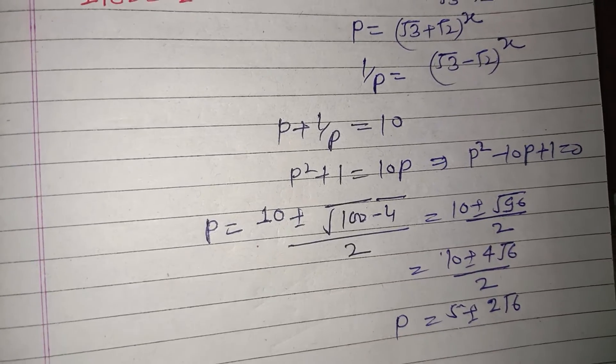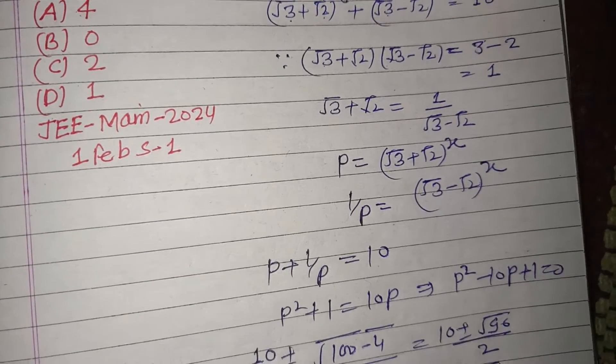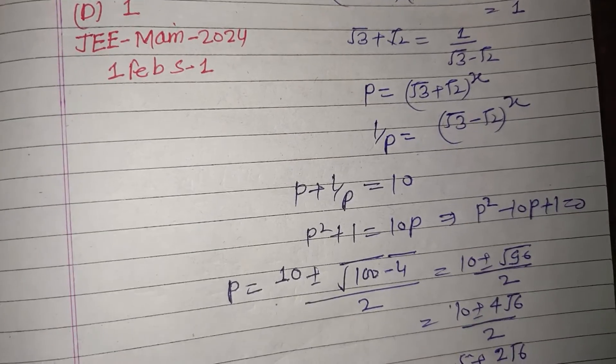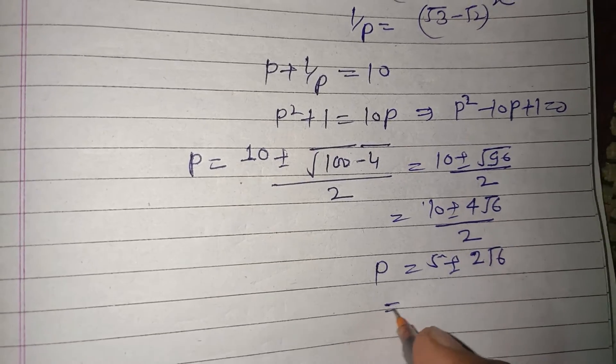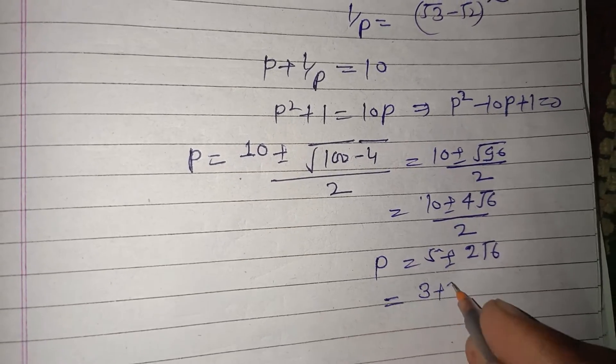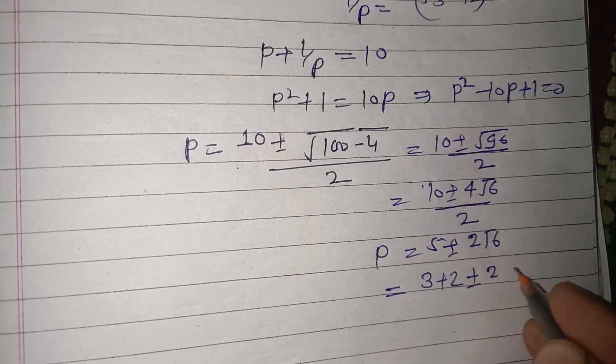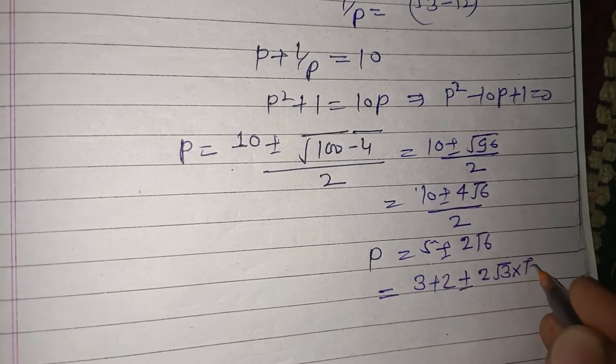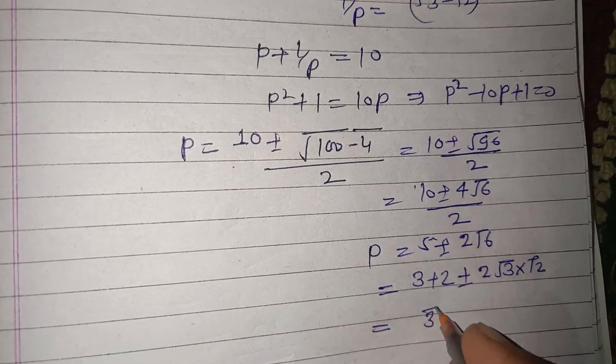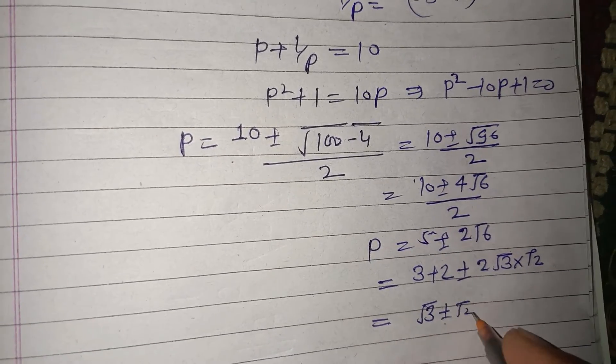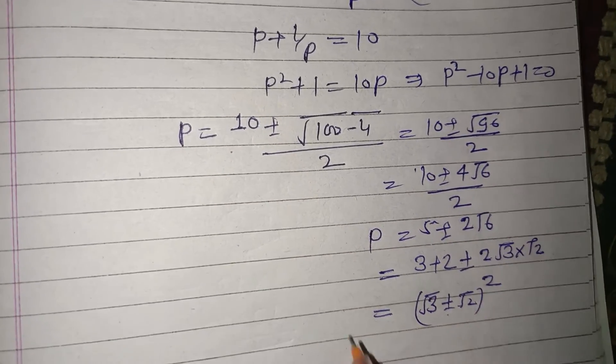So p = 5 ± 2√6. This can be written as 3 + 2 ± 2√3√2, which is the whole square of (√3 ± √2)².